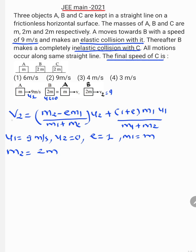Now, V2 is the velocity of block B after collision. The equation is V2 = (M2 - E×M1)/(M1 + M2) × U2 + (1 + E)×M1×U1/(M1 + M2). Here U1 is the initial velocity of object A before collision, that is 9 meter per second. U2 is the initial velocity of block B before collision, but block B is at rest, so U2 is 0. For elastic collision, coefficient of restitution E is 1. M1 is M, M2 is 2M.